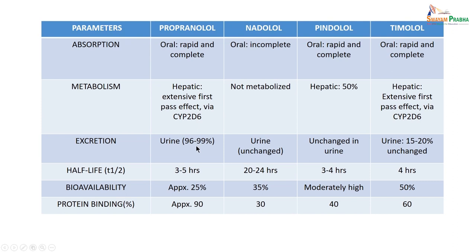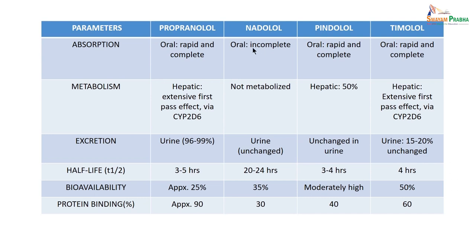Half-life: propranolol is 3–5 hours; nadolol has a very long half-life of 20–24 hours; pindolol is 3–4 hours; timolol is 4 hours. Bioavailability after oral administration: propranolol is 25%; nadolol is 35%; pindolol is moderately high; timolol is only 50%. Plasma protein binding is very high for propranolol; nadolol is 30%; pindolol is 40–60%. So you can have a comparative pharmacokinetic evaluation of propranolol, nadolol, pindolol, and timolol when given orally.